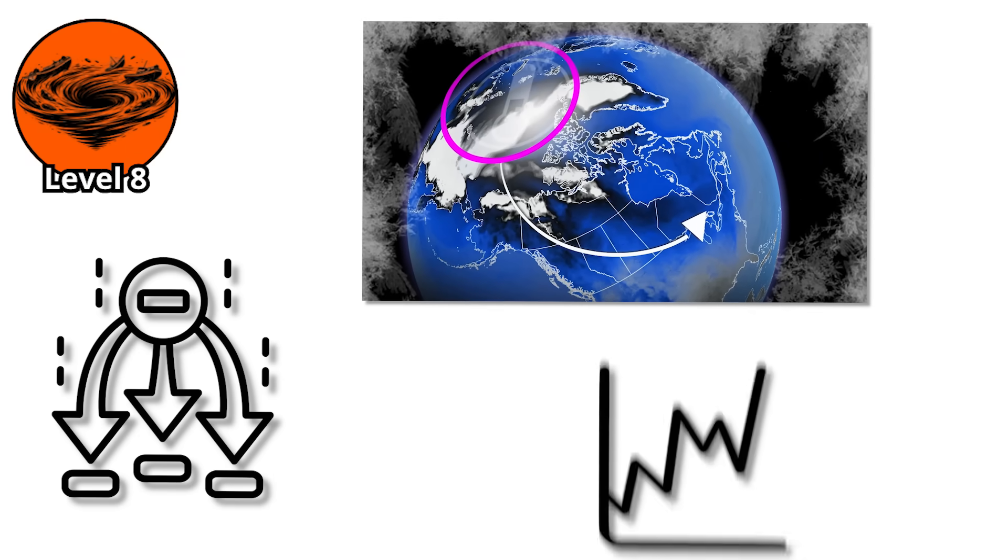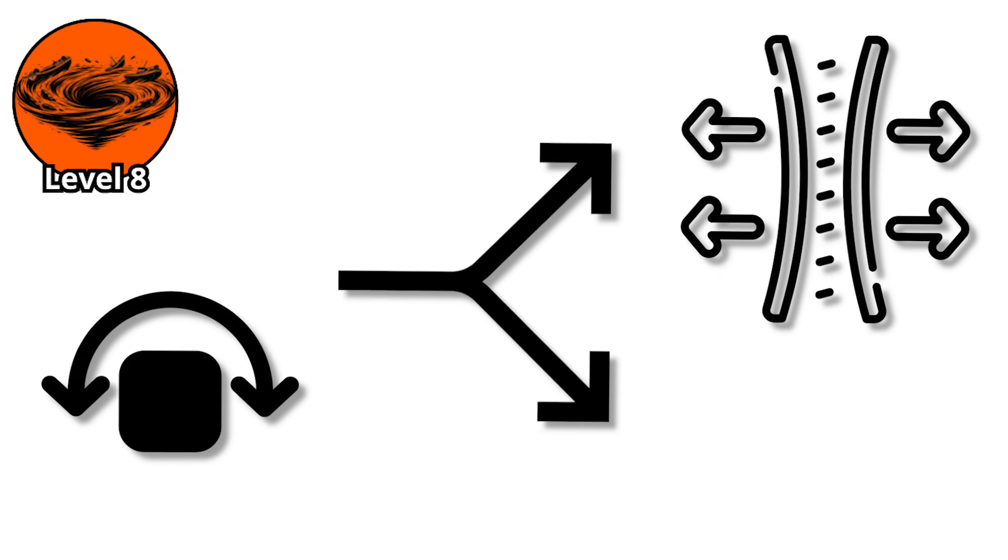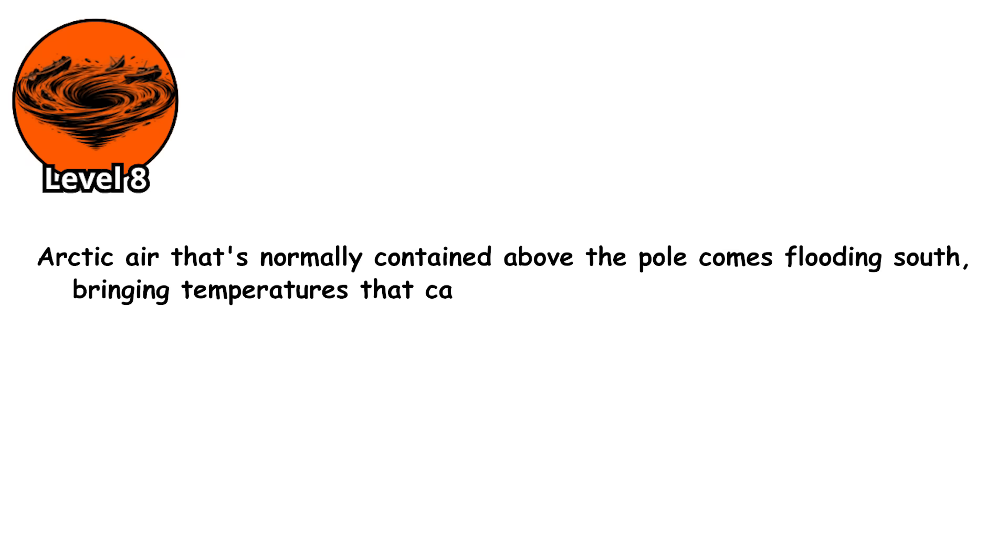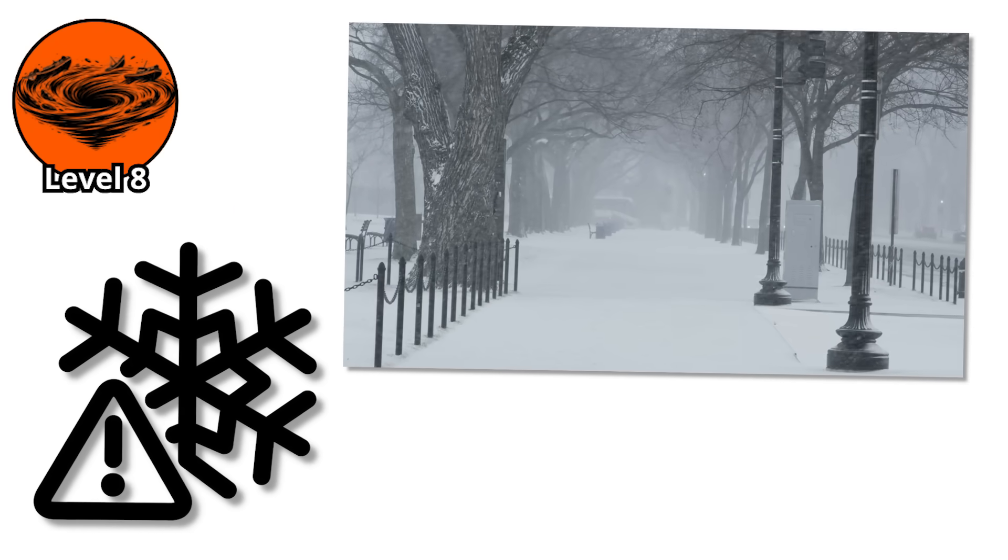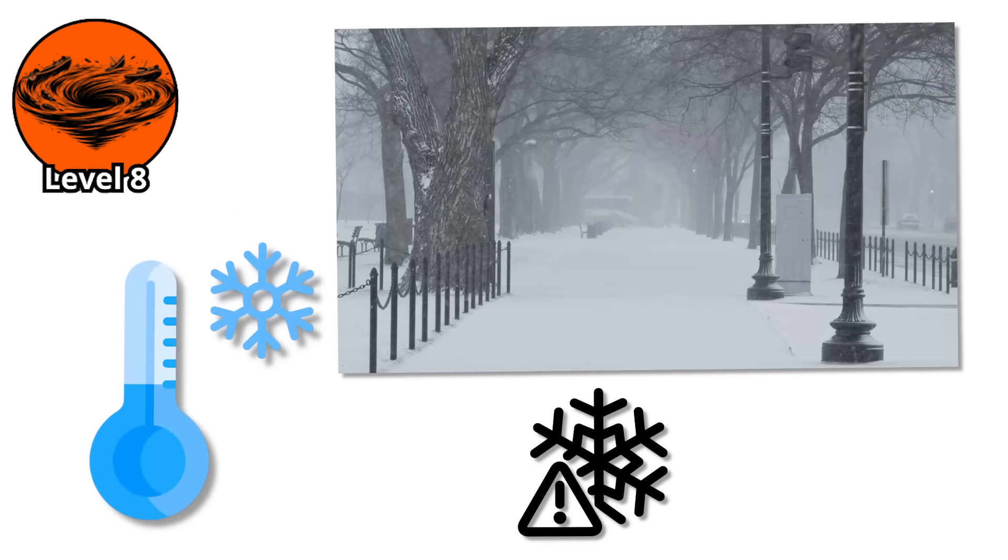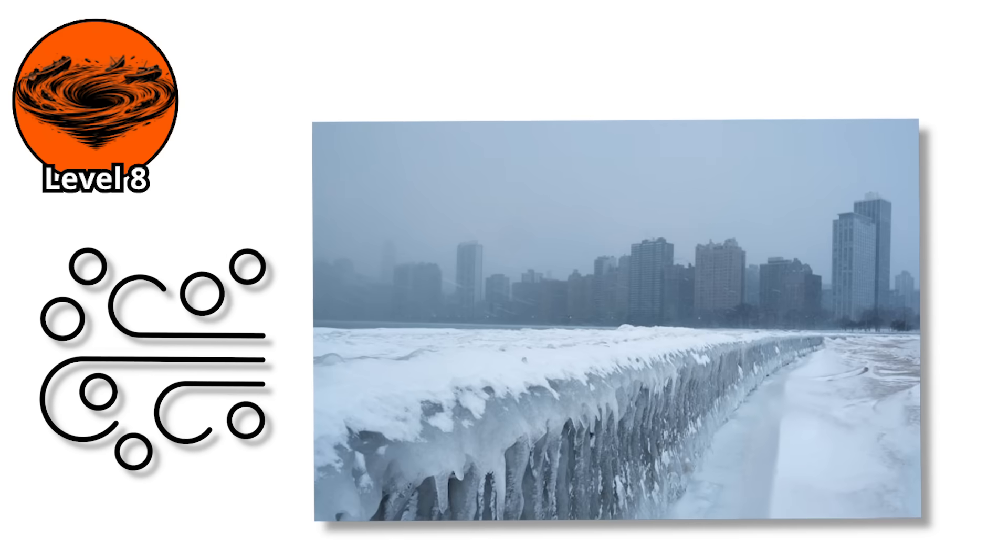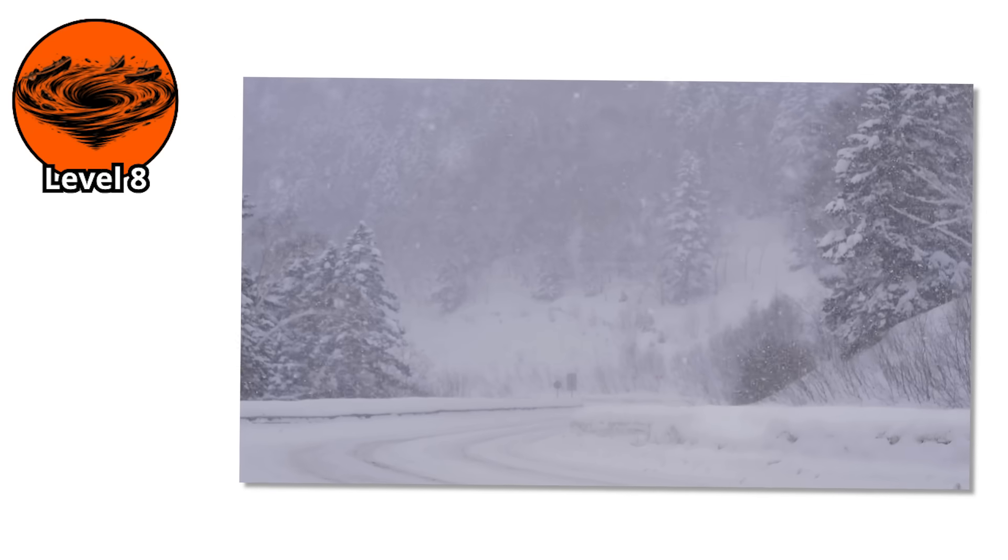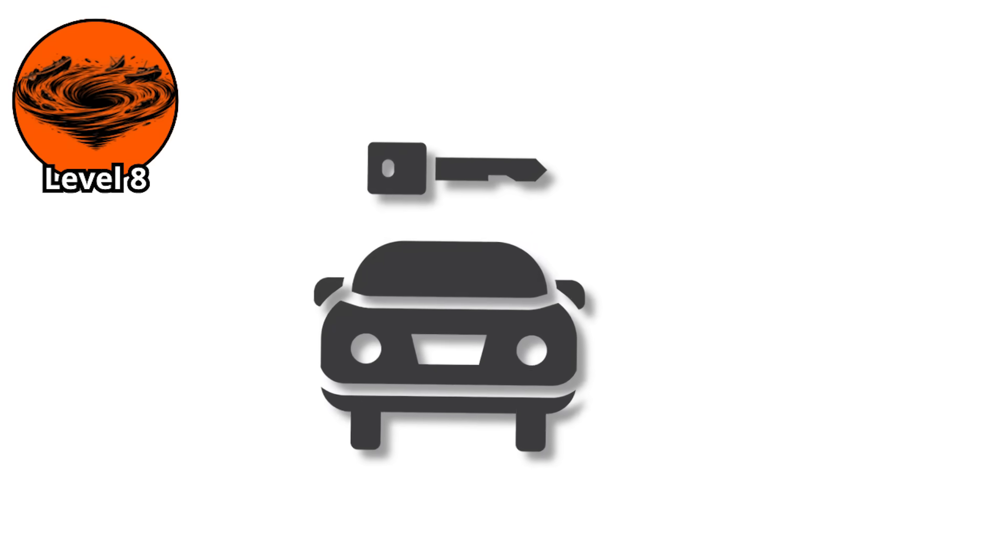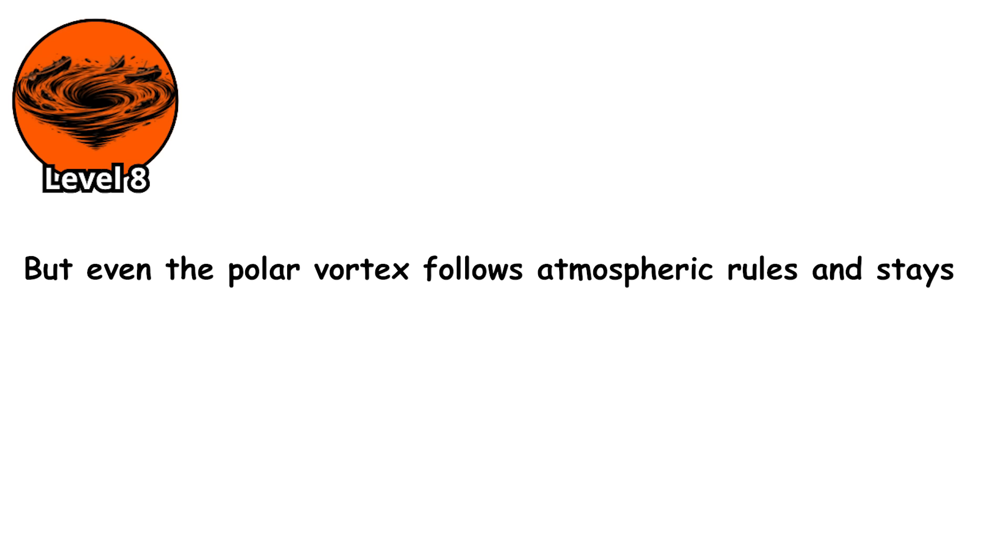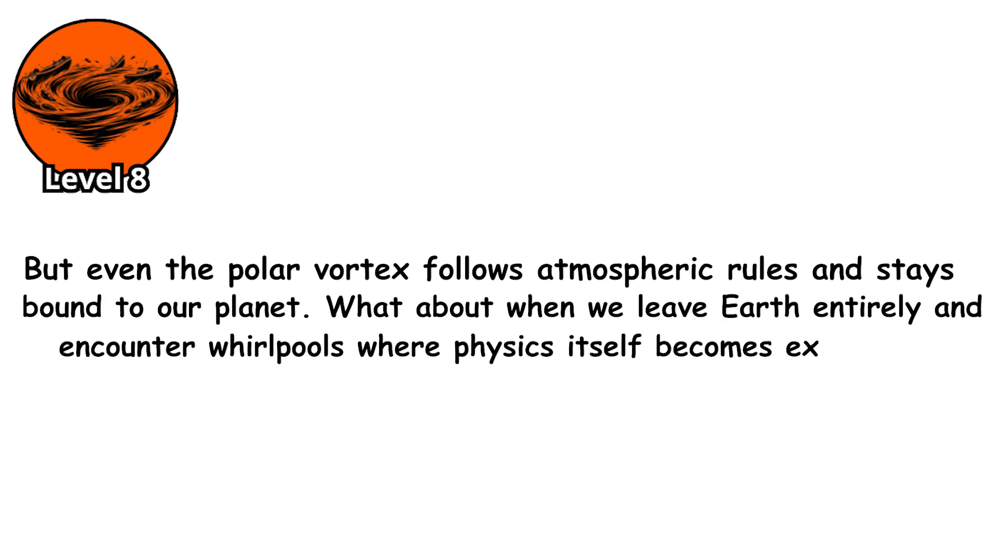But when this vortex weakens or becomes unstable, it can wobble, stretch, or even split into multiple pieces. When that happens, arctic air that's normally contained above the pole comes flooding south, bringing temperatures that can drop 50 or 60 degrees Fahrenheit in a matter of hours. This is what causes those extreme cold snaps where places like Texas or Florida experience snowfall and record low temperatures. In 2019, a weakened polar vortex brought temperatures to Chicago that, with wind chill, reached negative 50 degrees Fahrenheit. At those temperatures, exposed skin freezes in minutes. Cars won't start. Pipes burst. People die in their homes when heating systems fail. But even the polar vortex follows atmospheric rules and stays bound to our planet. What about when we leave Earth entirely and encounter whirlpools where physics itself becomes extreme? Level 9.